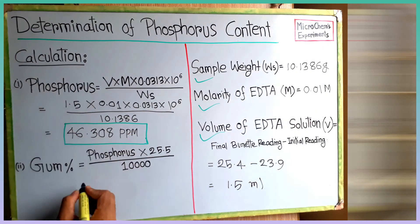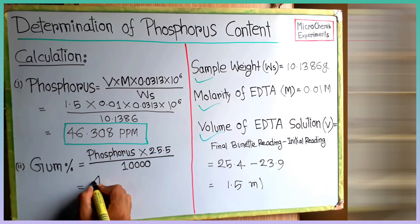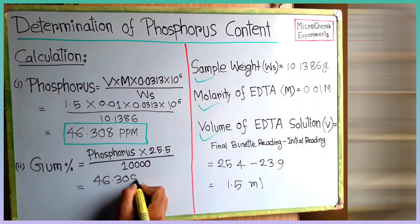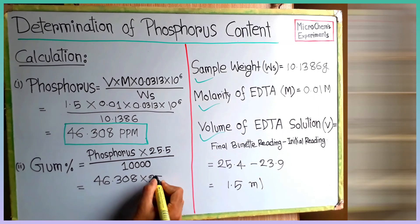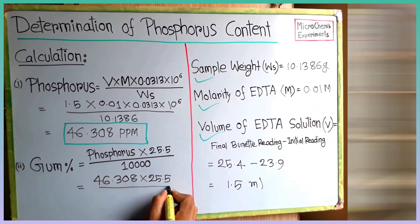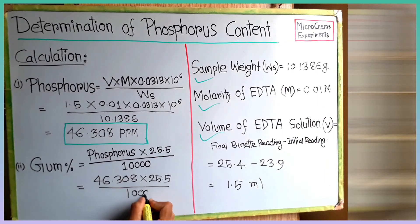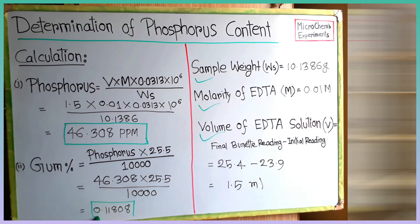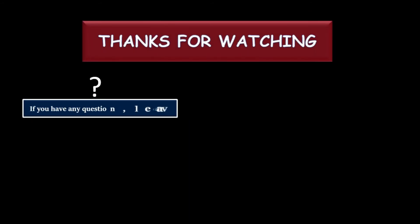Now we will find the gum percent using the phosphorus content in equation 2. By solving the equation we get the gum percent of the oil sample is 0.118 percent.